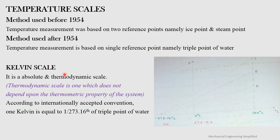The Kelvin scale is an absolute and thermodynamic scale. An absolute scale has only positive values with no negative values. A thermodynamic scale does not depend upon the thermometric property of the system. By internationally accepted convention, one kelvin is defined as 1/273.16 of the triple point of water.